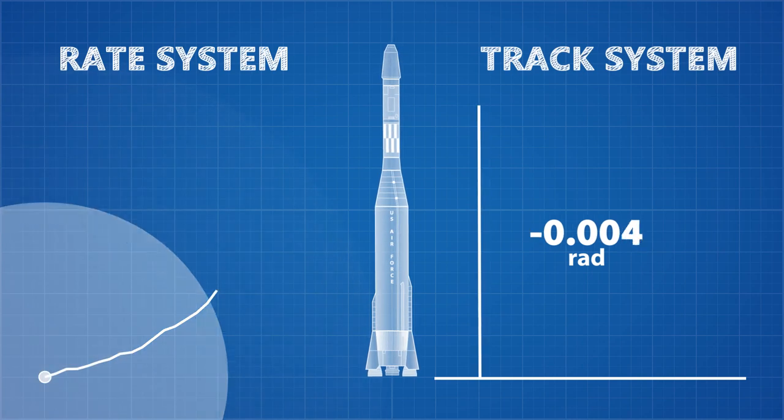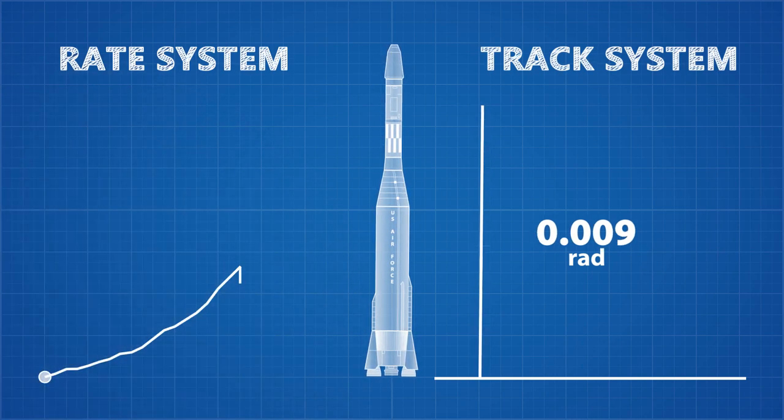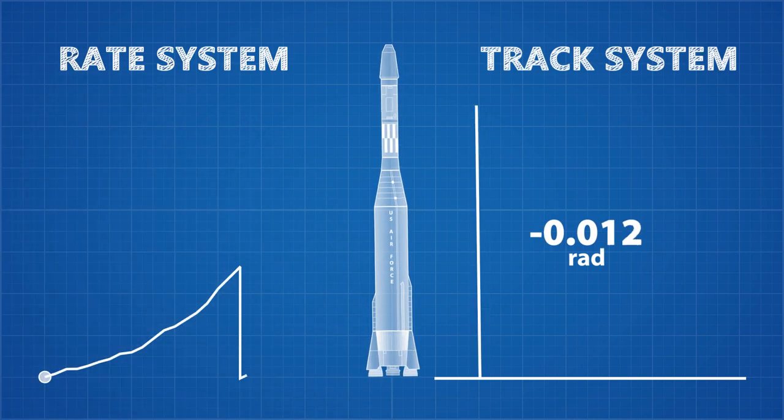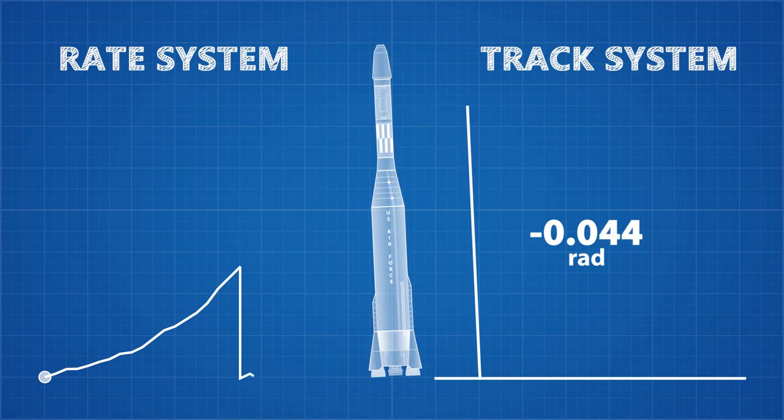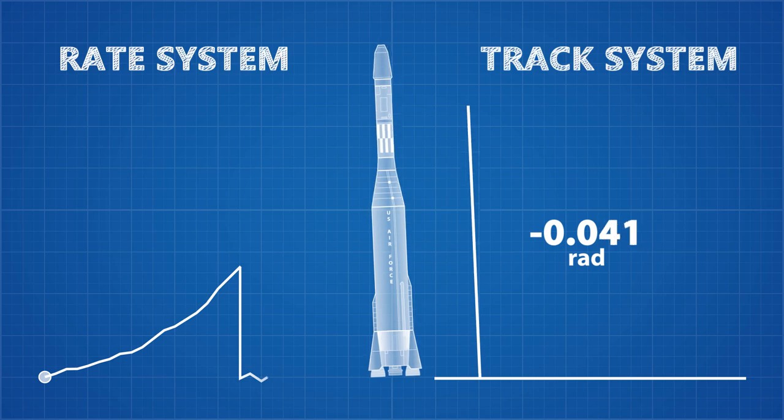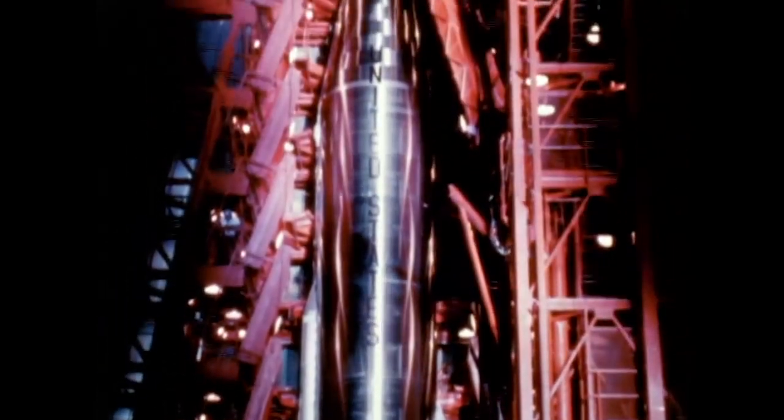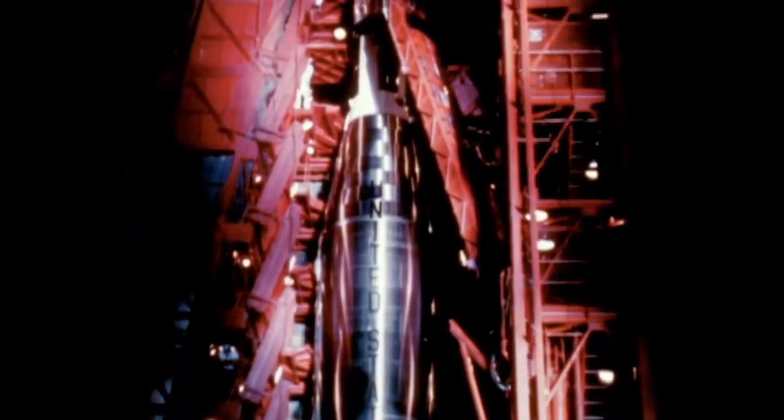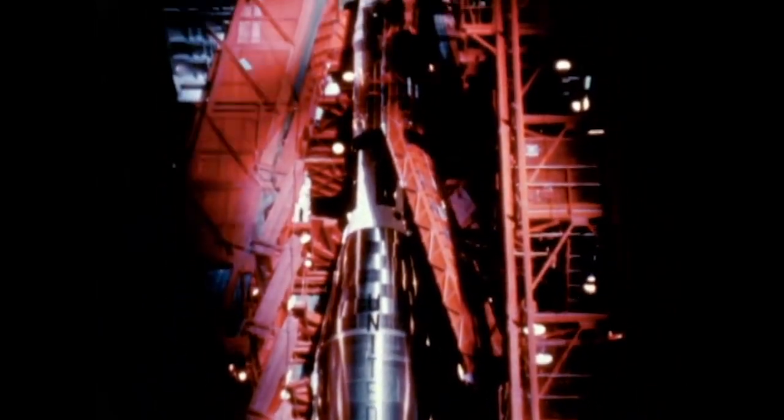Shortly into the launch, the first problem occurred. The rate system failed. The track system should have been capable of handling navigation by itself. The two systems working together formed some redundancy in measurements to allow for a small margin of error. This is why previous launches using the Atlas Agena rockets went off without a hitch, but on this occasion the rate system failed.